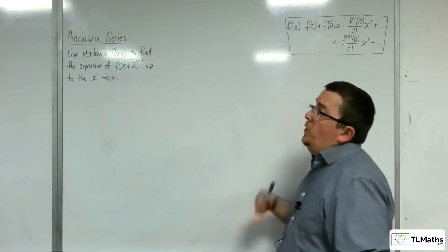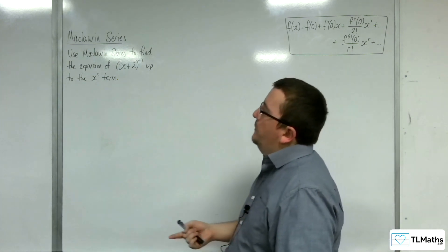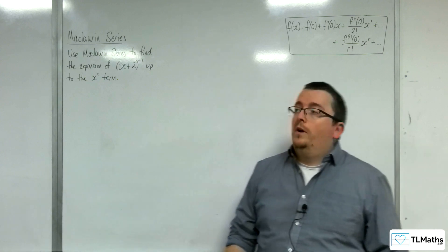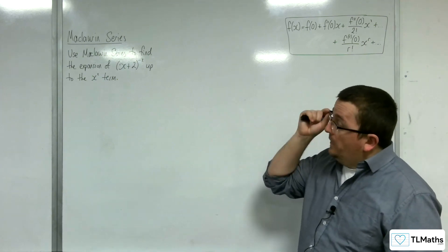Okay, so in this video I'm going to show you how we can use Maclaurin series to find the expansion of something like (x+2)^(-2) up to the x² term in this case.